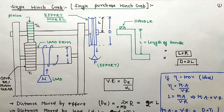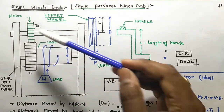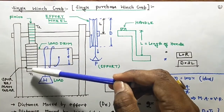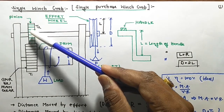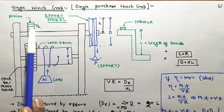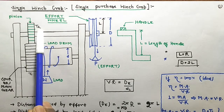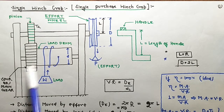First of all, in Single Purchase Winch Crab, 'winch crab' in Hindi means 'chatak-cadda' (a type of crane/hoist). In a single purchase winch crab, there are gears — one is a pinion and one is a main gear. The pinion is the smaller one and the main gear is larger. The pinion has fewer teeth: its number of teeth is T2 and it is less than T1.